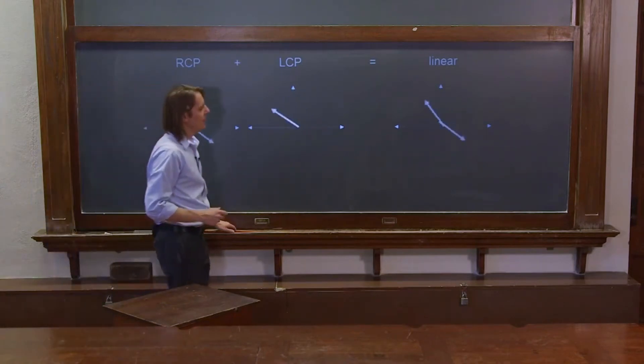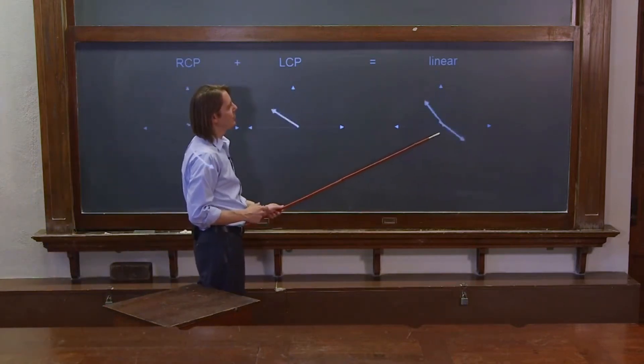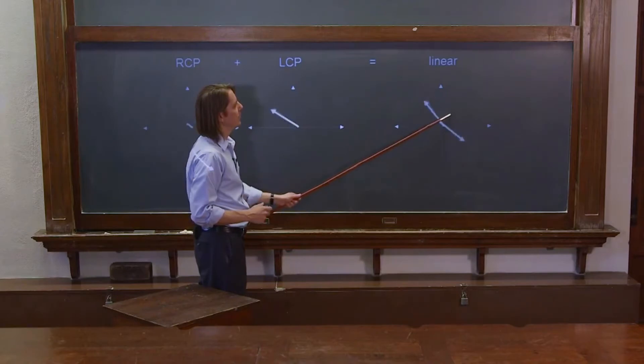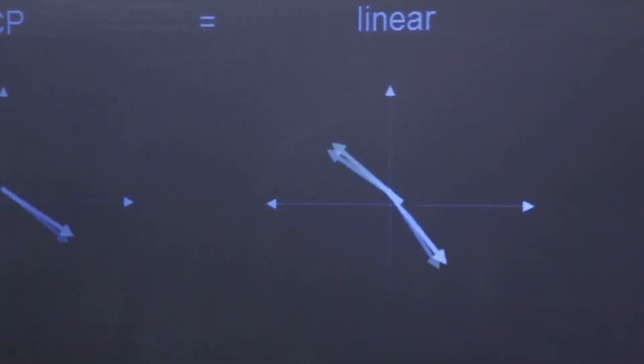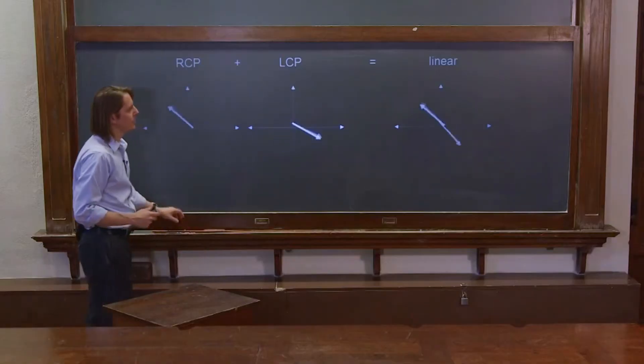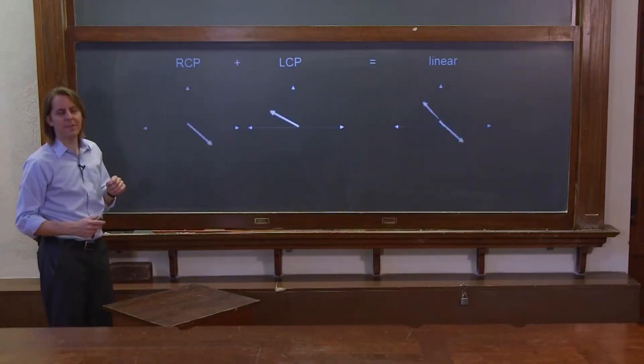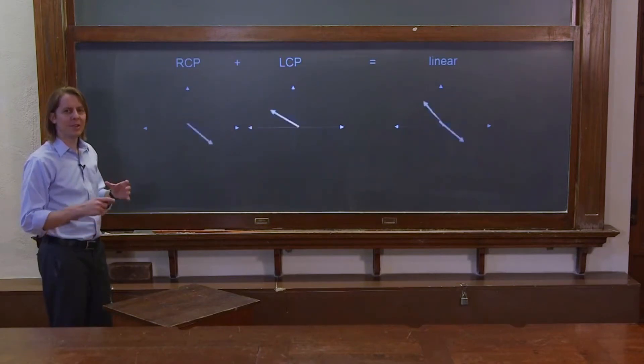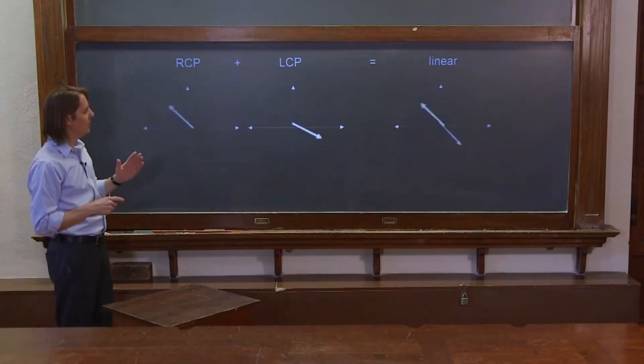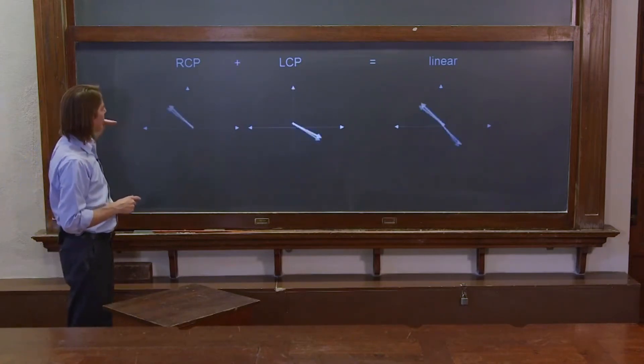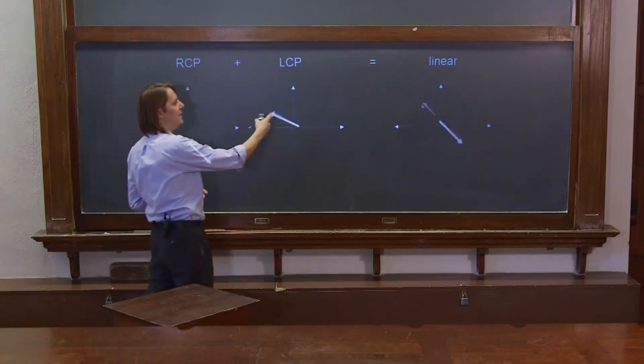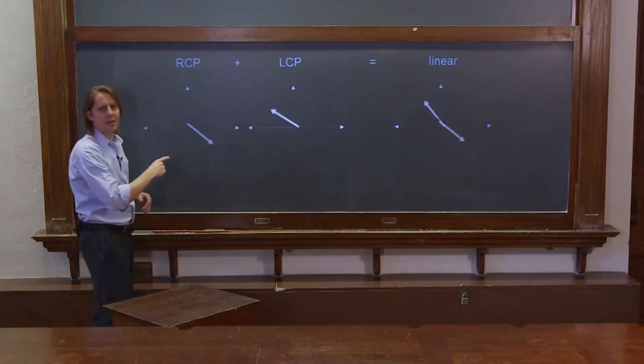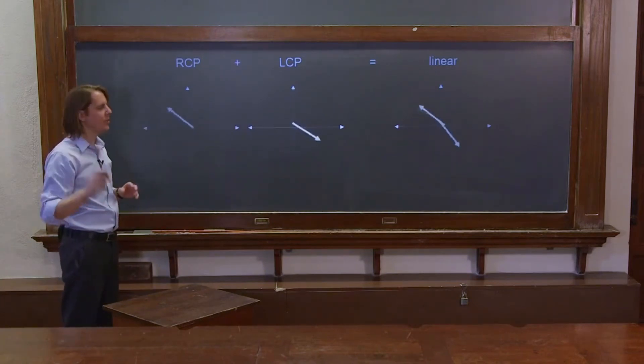That's RCP and LCP. If we do the superposition of those two, it's going this way and this way—it's linear light. Here's the interesting part: you can also have a refractive index for circular light. In addition to having anisotropy where you have N horizontal and N vertical, you can actually have an N for RCP and an N for LCP. It shows up when you get chiral molecular structures. We'll worry about that later.